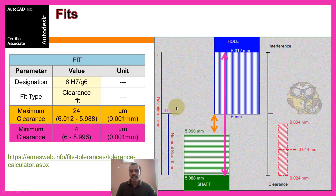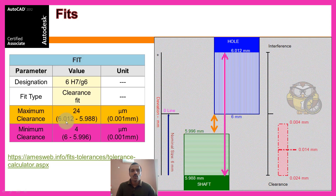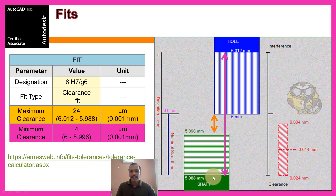This is the gap. Graphical representation: minimum clearance fit. The gap is 6 minus 5.996. Minimum clearance, maximum clearance — maximum hole size is 6.012 and minimum shaft size is 5.988.